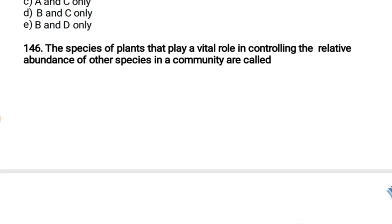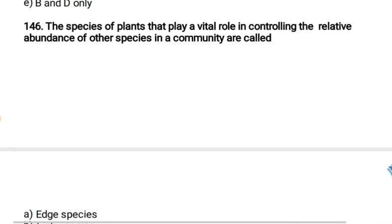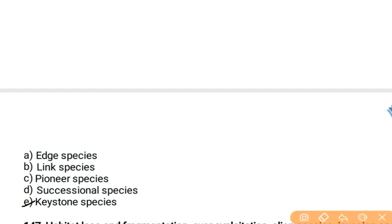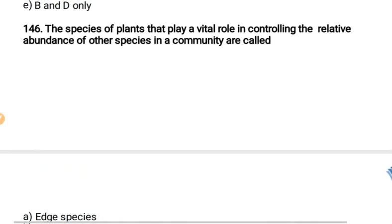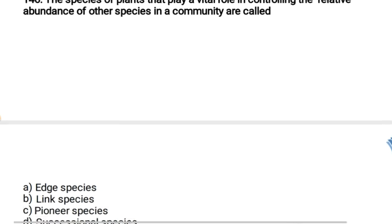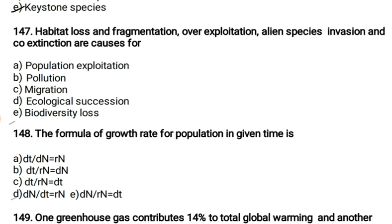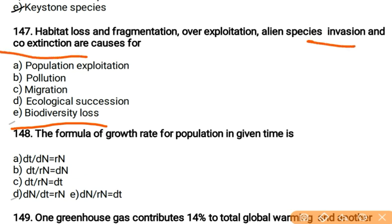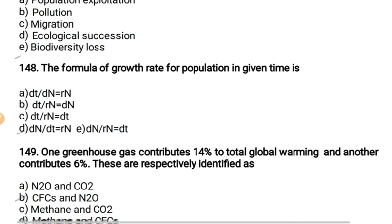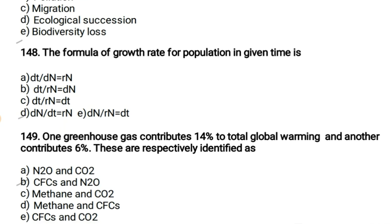The species of plants that play a vital role in controlling the relative abundance of other species in a community are called keystone species. Habitat loss and fragmentation, over-exploitation, alien species invasion, and co-extinctions are causes for biodiversity loss. The formula for growth rate of population in a given time is dN/dt = rN.